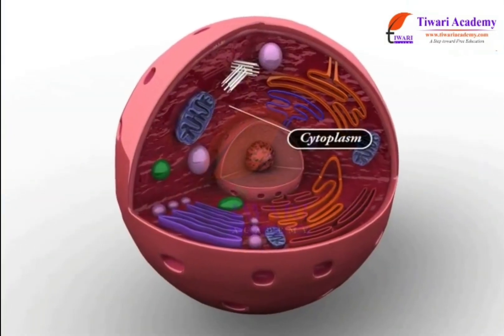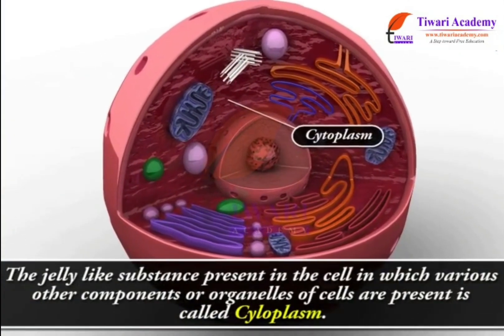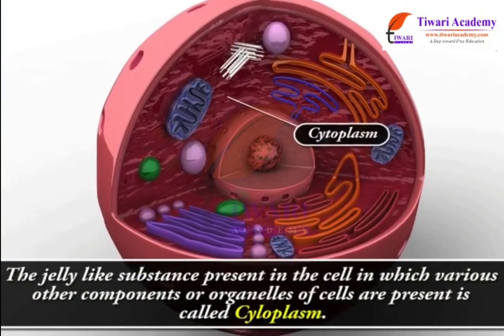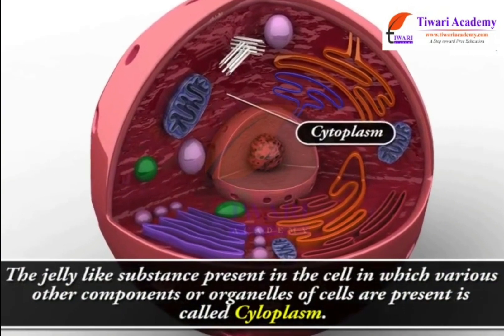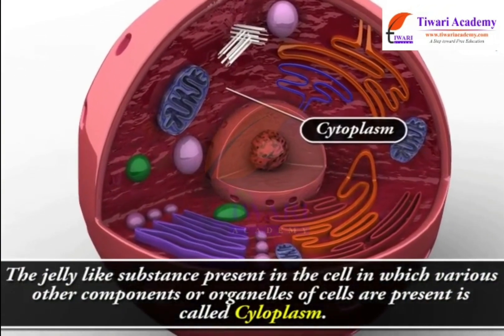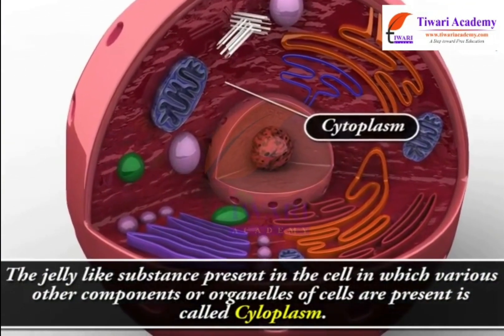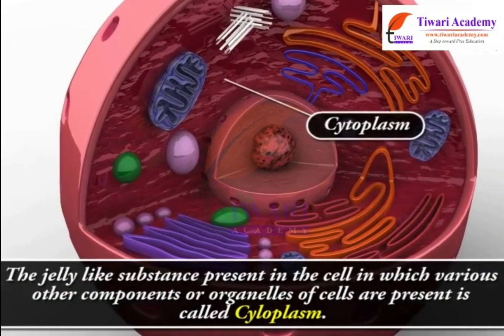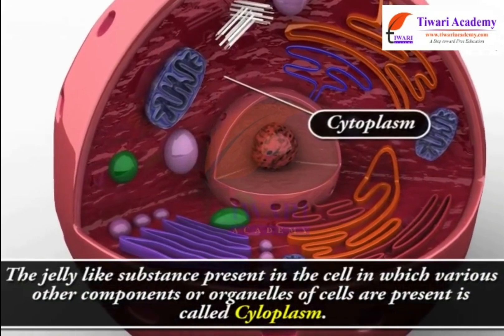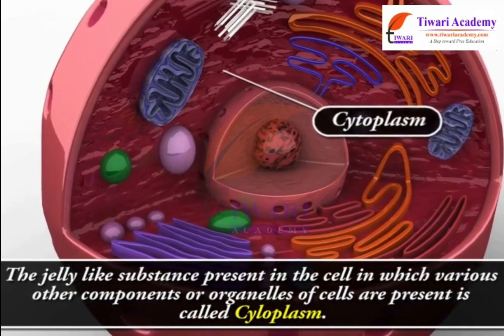The jelly-like substance present in the cell, in which various other components or organelles of the cell are present, is called cytoplasm.